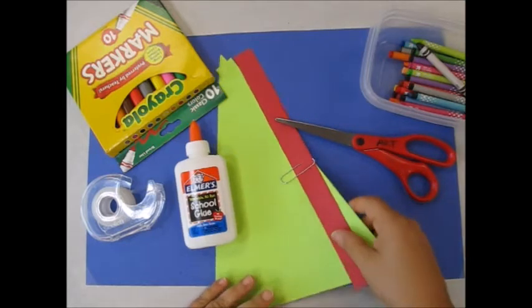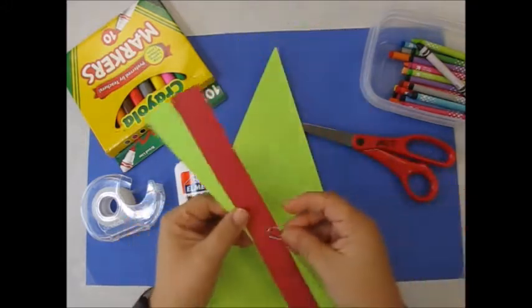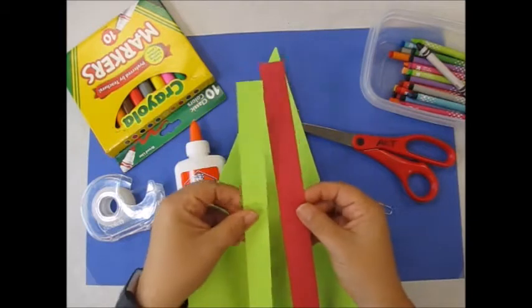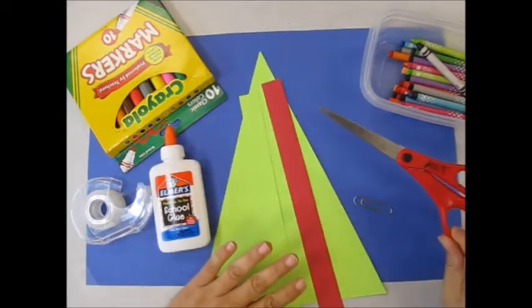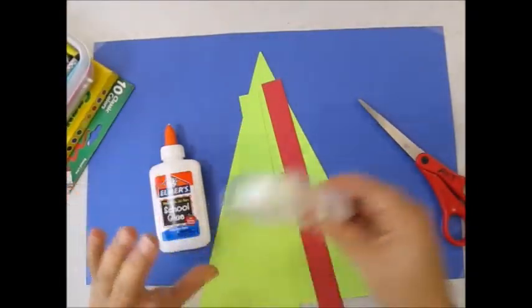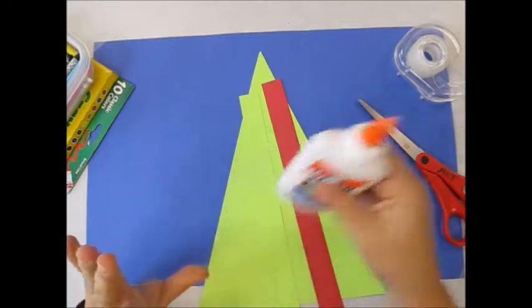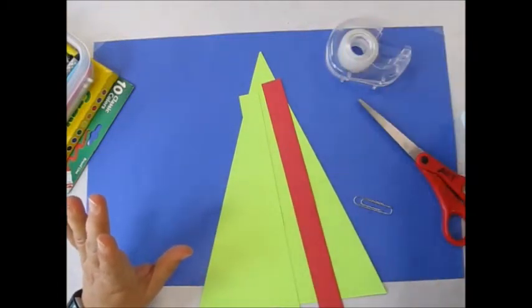So in your packet you should have had a triangle with two strips, a green one and a red one. You at home need to bring scissors, markers and crayons, some tape or a bottle of glue. Tape works better because it's faster but the glue does work.